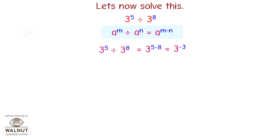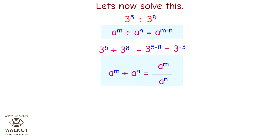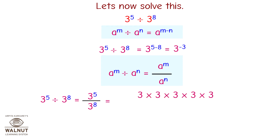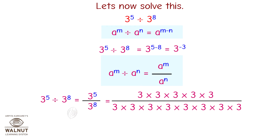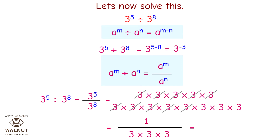Now we solve this using the law a raised to m divided by a raised to n is equal to a raised to m upon a raised to n. That is, 3 raised to 5 divided by 3 raised to 8 is equal to 3 raised to 5 upon 3 raised to 8. Writing in multiplication form: 5 threes multiplied divided by 8 threes multiplied. We cancel out the 3s from top and bottom and we get 1 upon 3 raised to 3.